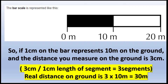As an example: if one centimeter on the bar represents 10 meters on the ground — that segment from zero to 10 equals one centimeter — then if I measure one centimeter on my map, it will be 10 meters on the ground. If I measure three centimeters, I divide three by one centimeter, giving me three segments. Each segment equals 10 meters, so I multiply three by 10 meters to get 30 meters on the ground.